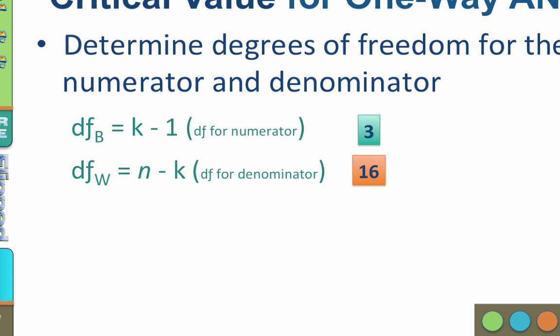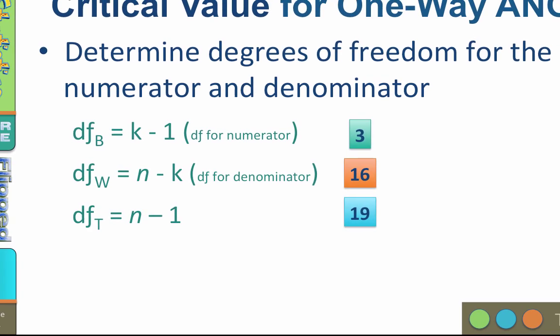The degrees of freedom total equals n minus 1, as it always does, with n being the total number of participants in all groups. There are 20 participants, so the degrees of freedom total would be 19.